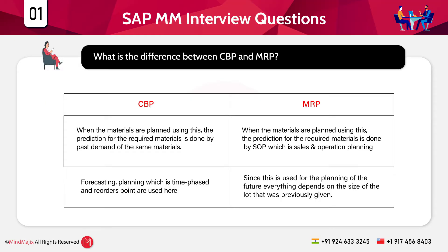The first question is: what is the difference between CBP and MRP? In an interview, when asked about differences, you can grab a piece of paper, make two columns — one for CBP and one for MRP — and write the differentiating points in those columns.